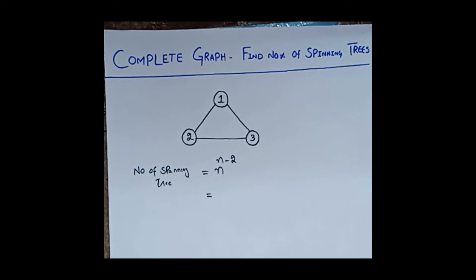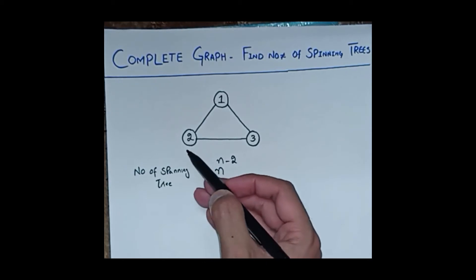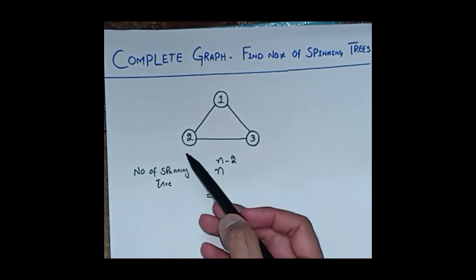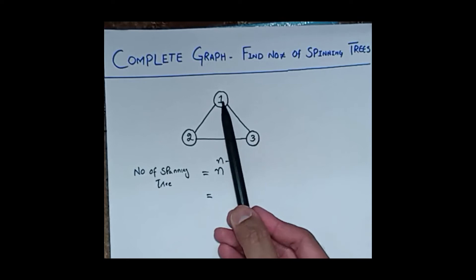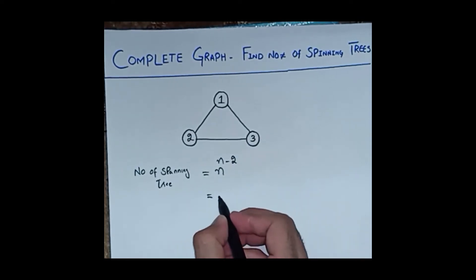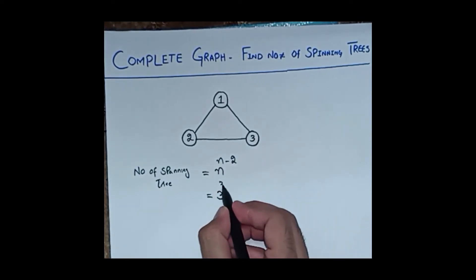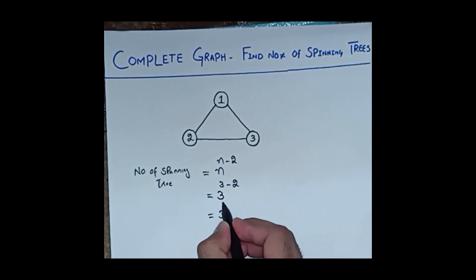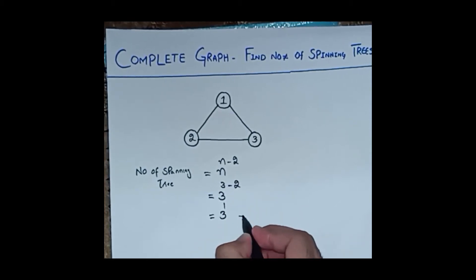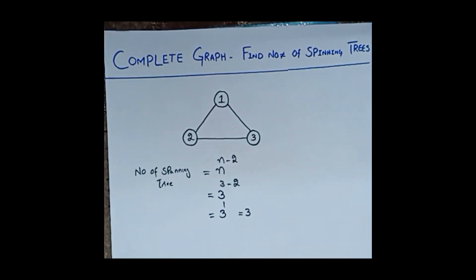Through this formula we can determine the number of possible spanning trees from a complete graph, where n is the number of vertices, or nodes. Here the number of vertices or nodes are one, two, three, so n equals 3. Therefore that is 3 to the power of 3 minus 2, which is 3 to the power 1, that is equal to 3.